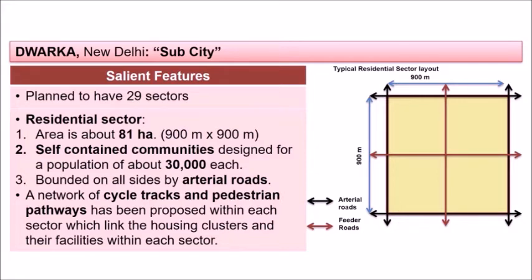The characteristic of Dwarka sub-city was that the sectors were self-contained, each designed for a population of 30,000. The sectors were bounded on all sides by arterial roads, and there was a network of cycle tracks and pedestrian paths proposed within each sector which linked housing clusters and their facilities.